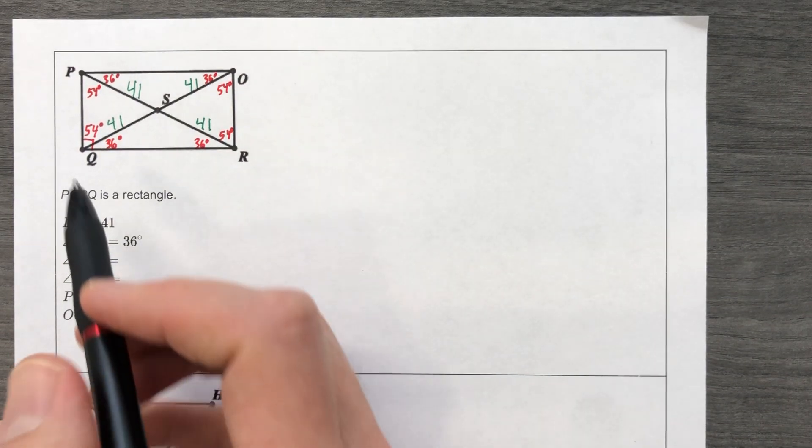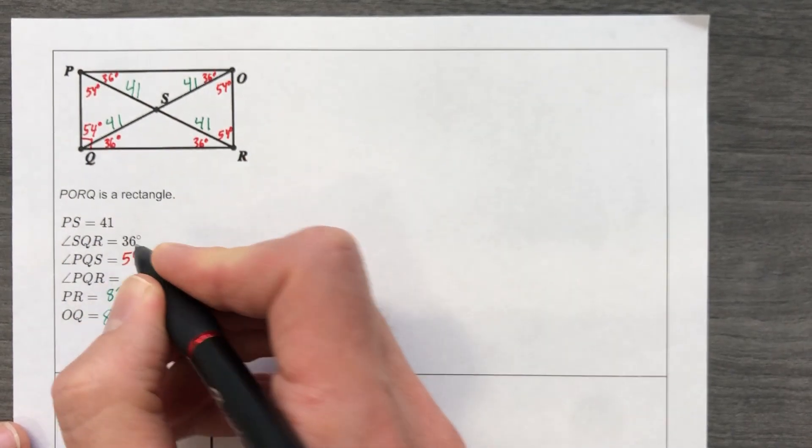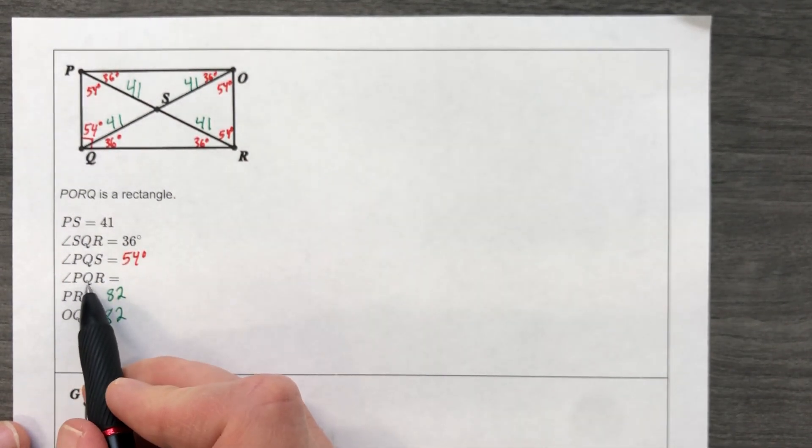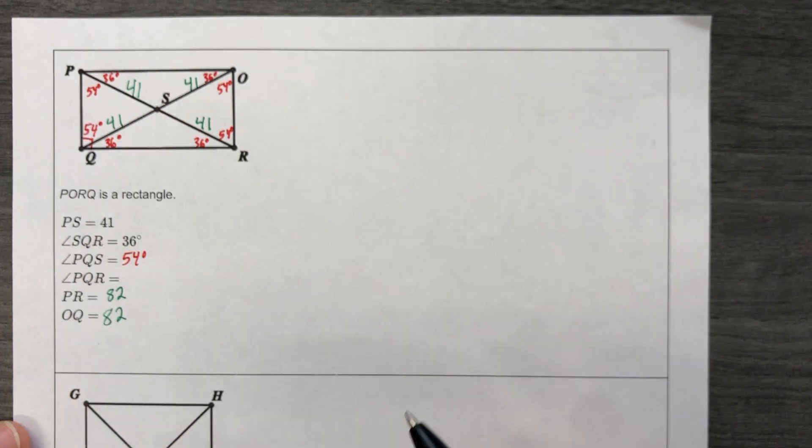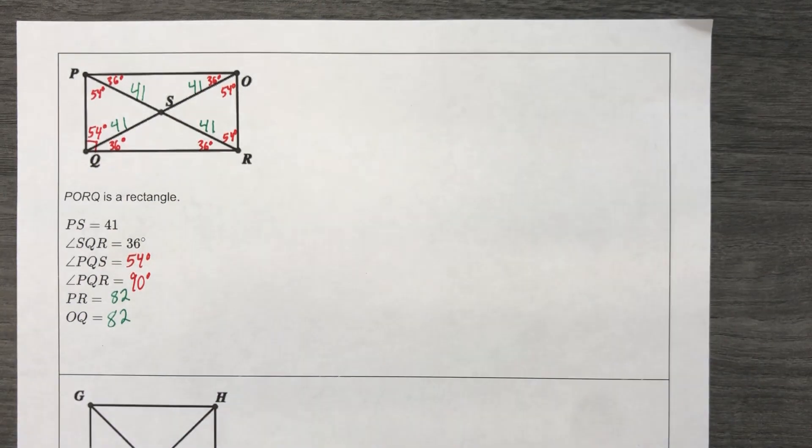All right. P-Q-S. P-Q-S. That's 54 degrees. Okay, good. P-Q-R. Don't miss this one. P-Q-R is 90. You might say, we're done. We are done.